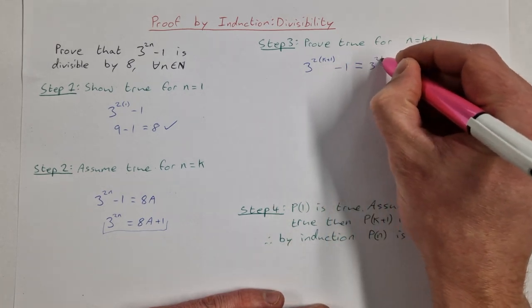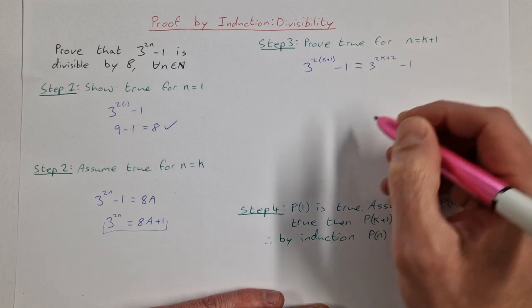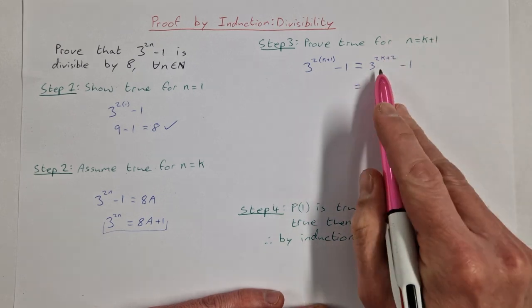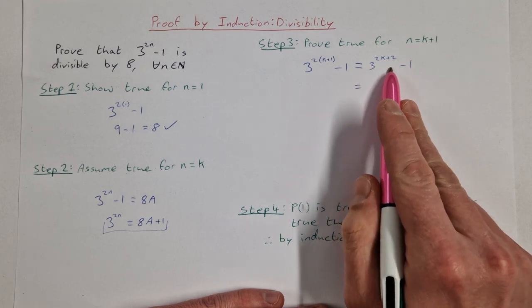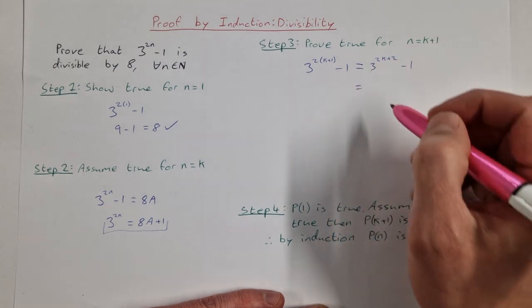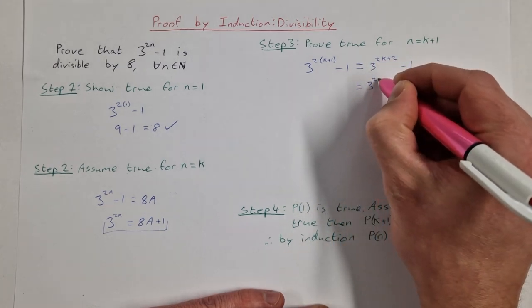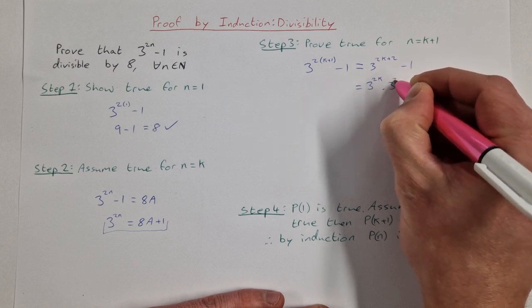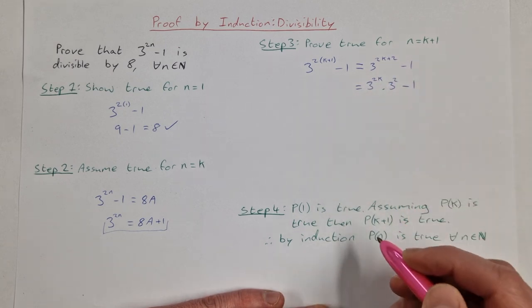So that's 3 to the power of 2k plus 2 minus 1. I can use my laws of indices to rewrite 3 to the power of 2k plus 2 as 3 to the power of 2k multiplied by 3 to the power of 2, and I have my minus 1.